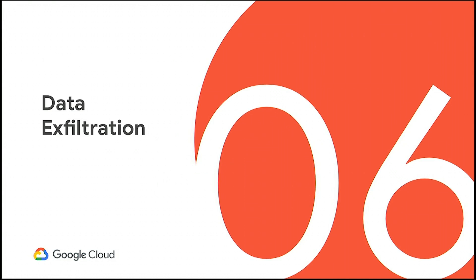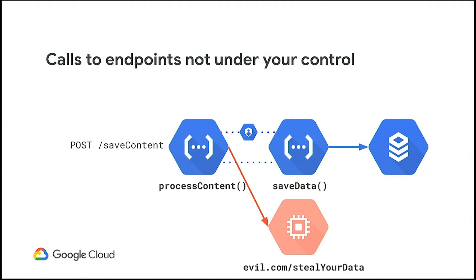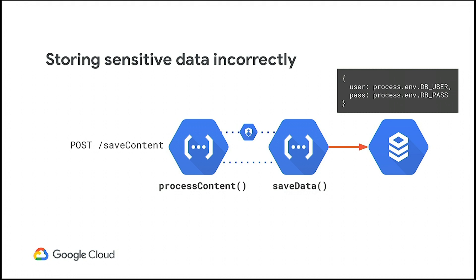A couple of other data exfiltration threats: your process-content function could be manipulated to send data to evil.com instead of the save-data function — caused by remote code execution or a tampered URL variable. Similarly, someone could dump your environment variables and store them in the database, making your database username and password readable by another function. And query injection — SQL injection attacks like the XKCD 'Little Bobby Tables' comic. Don't name your kid a valid SQL statement. If your save-data function builds queries by directly concatenating user input, you'll end up inserting arbitrary SQL like 'drop table posts.'